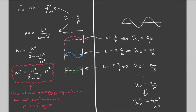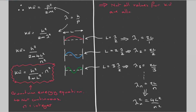There are many values that are not allowed — n is not allowed to be 1.5, for example. So just as only certain wavelengths fit for a confined particle, this feeds through to mean that only certain values of kinetic energy are allowed. This equation tells us the allowed values for kinetic energy.